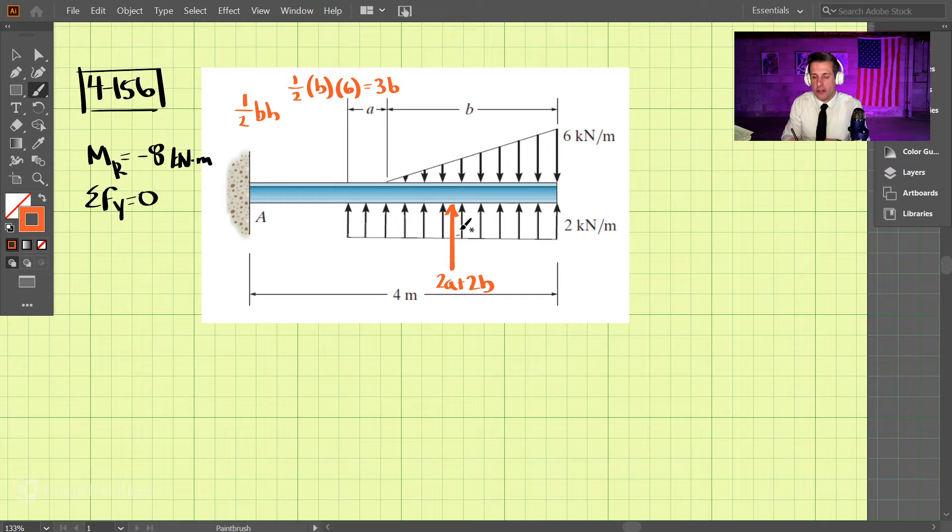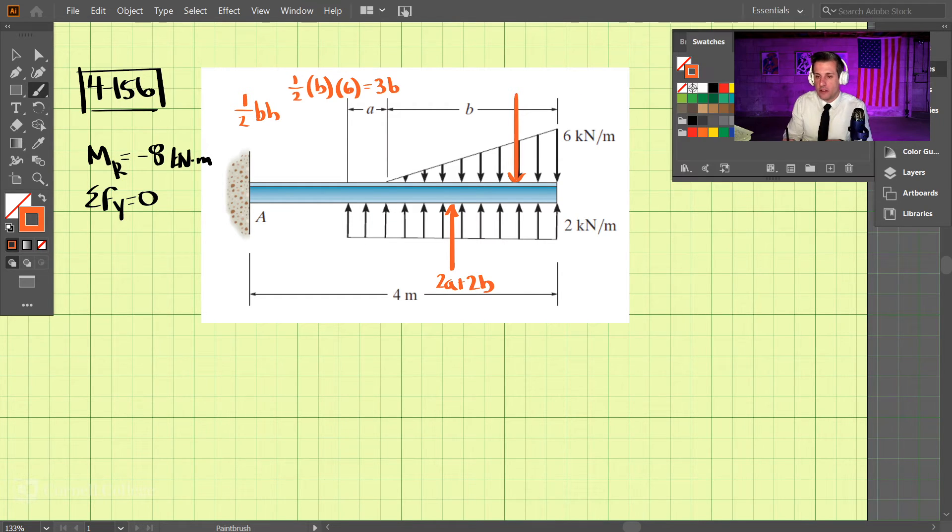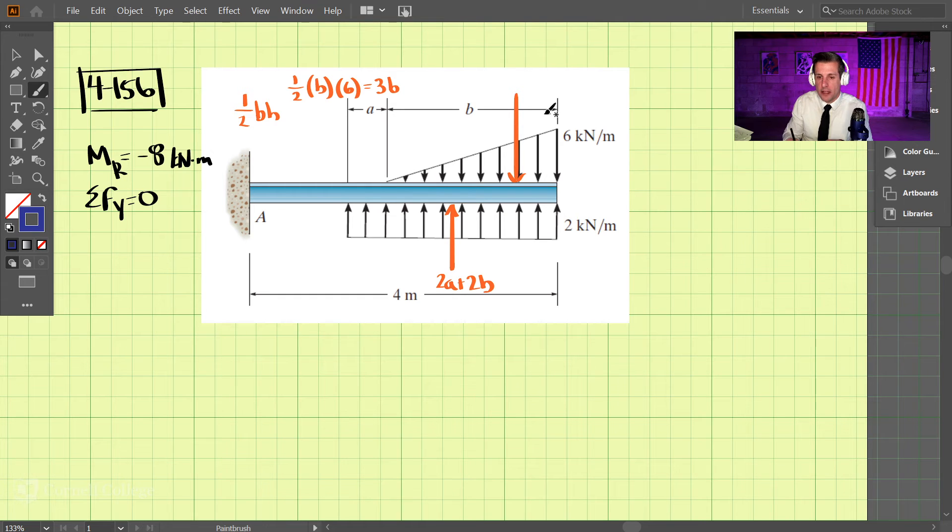It's located closer to the high side, and the distance from here to here is always one-third times the base. So this distance is b over three.